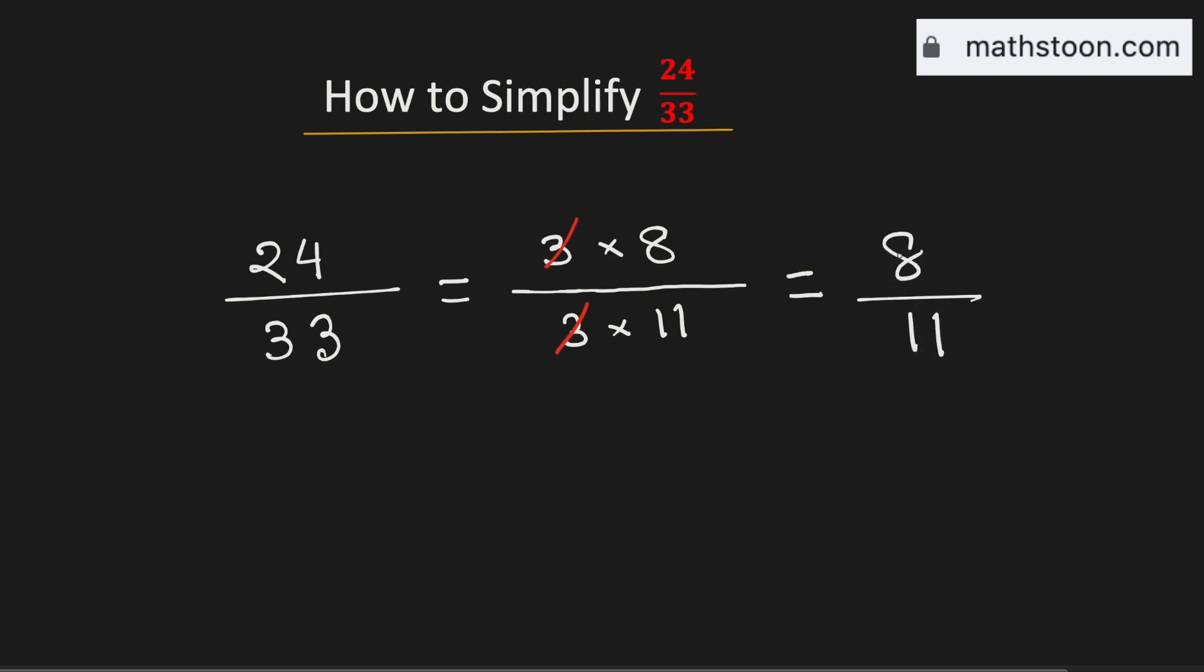As there is no number which can divide both 8 and 11 simultaneously, this fraction is already in simplified form. So 8 over 11 is the simplified form of the fraction 24 over 33, and this is our final answer.